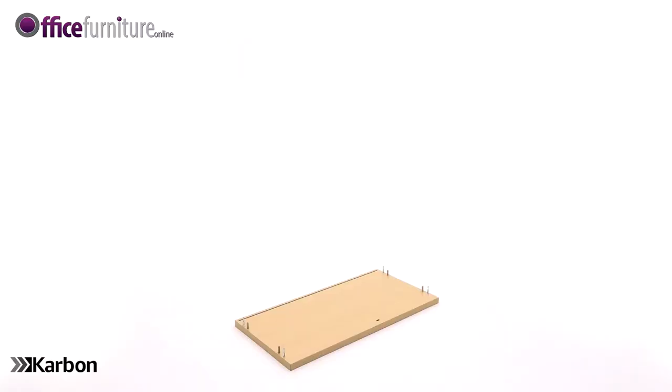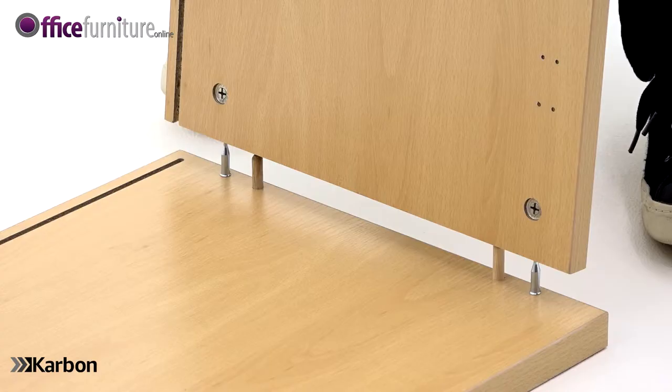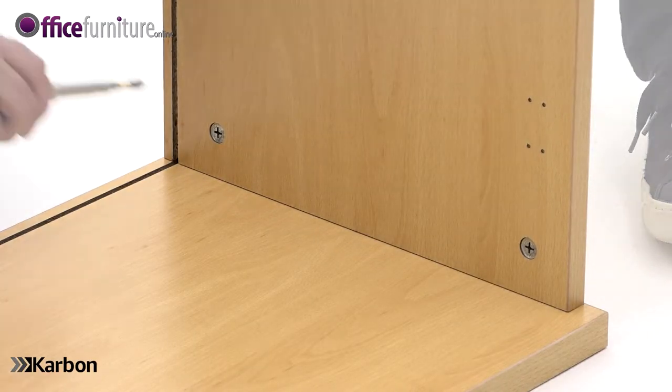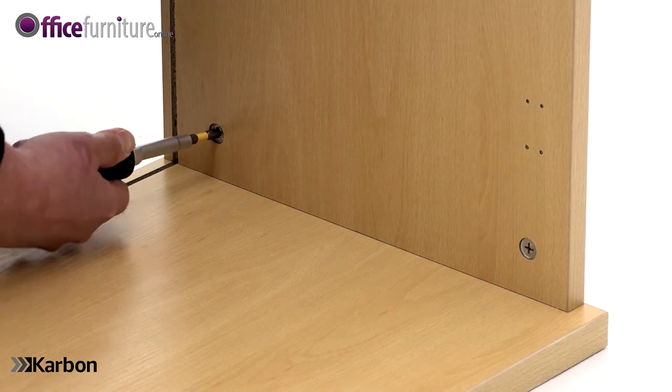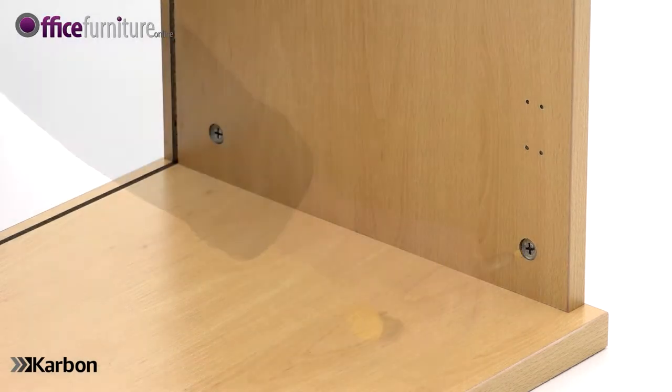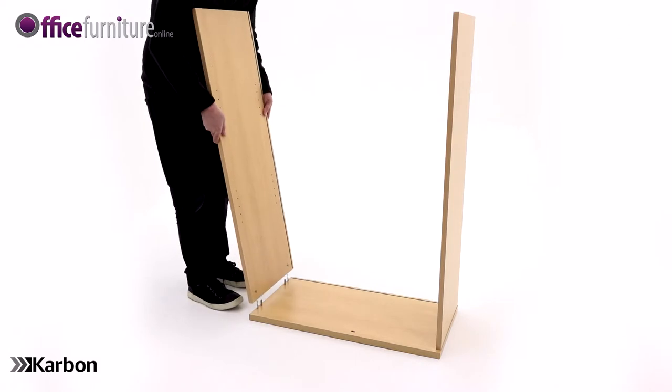With the top panel on the floor, push one of the side panels into position, lining up the holes in the side panel with the cam pins and dowels on the top panel. Tighten the cams until they lock, but take care not to over tighten. Repeat this step with the second side panel.